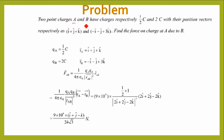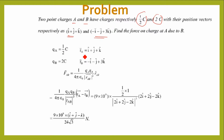Let's see the first problem: two point charges A and B have respectively half coulomb and two coulomb, with their position vectors given. Find the force on the charge at A and B. Q_A is half coulomb with position vector i + j + k, and Q_B is 2 coulombs with its given position vector.